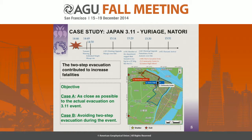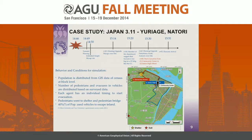Our simulation objectives were: first, to model as closely as possible what actually happened during the 3/11 event as a verification; and second, to explore what would have happened if the two-step evacuation had been avoided. In the simulation, the population is distributed using GIS data at census block level. The number of pedestrians and vehicle evacuees is based on pre- and post-event survey data. Each agent has an individual timing to start evacuation, drawn from a distribution. Pedestrians went to shelters or pedestrian bridges, and 40% of the population used vehicles, as reported in post-event surveys.